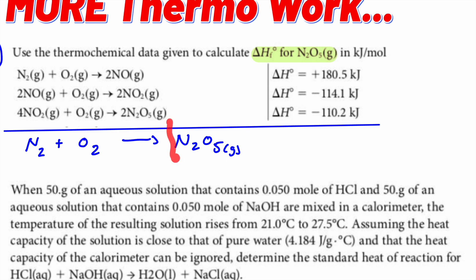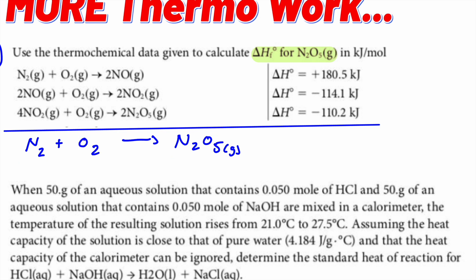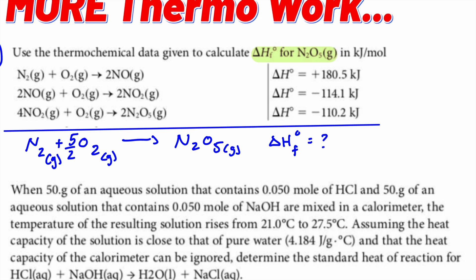I want one mole of N₂O₅. I already have N₂, but I need five oxygens and only have two. So I need five-halves of O₂ — those twos cancel and give me five oxygens. N₂O₅ is a gas. The goal is to find the enthalpy of formation of this equation.